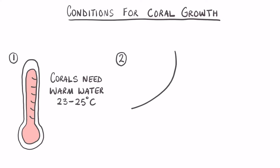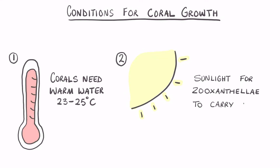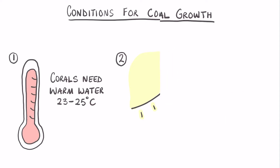A second condition needed for coral growth is sunlight. In order to keep the zooxanthellae thriving and growing well, there must be sufficient sunlight for the zooxanthellae to carry out photosynthesis, and once the zooxanthellae is thriving it helps the coral polyp and the entire reef to thrive as well. In fact, the depth at which a coral will grow in a particular area depends on how much light can penetrate into the water depth.